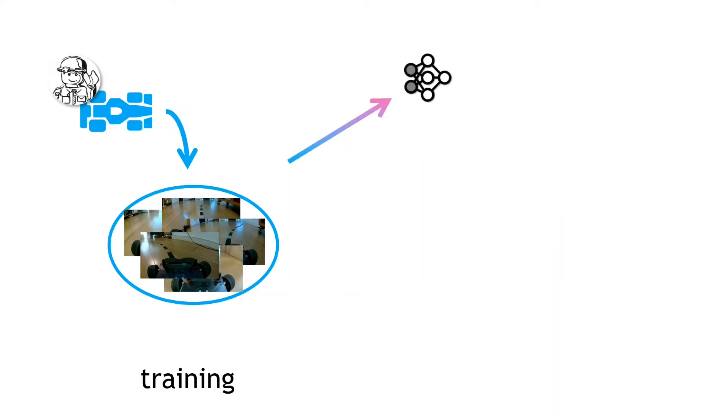This data is used to train a deep neural network policy that learns the mapping from each image to the associated control commands. This training is done using supervised learning. And with enough data and a suitable model size and structure, you can typically get a good fit of the model to the data.